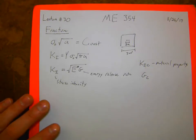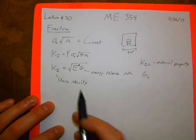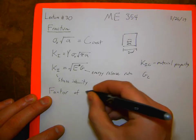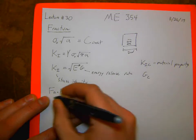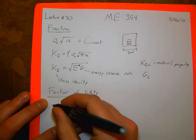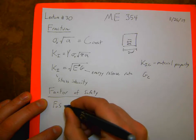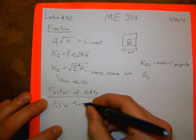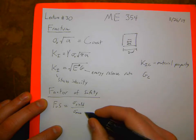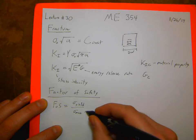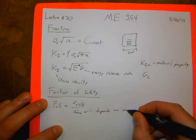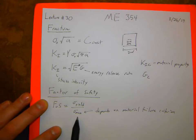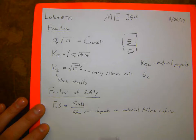I want to define the factor of safety for a crack. We have defined before the factor of safety for a ductile material as the yield strength over sigma-max, depending on the material failure criterion. This could be von Mises, or Tresca, or just the maximum principal stress, depending on whether we have a ductile or a brittle material.